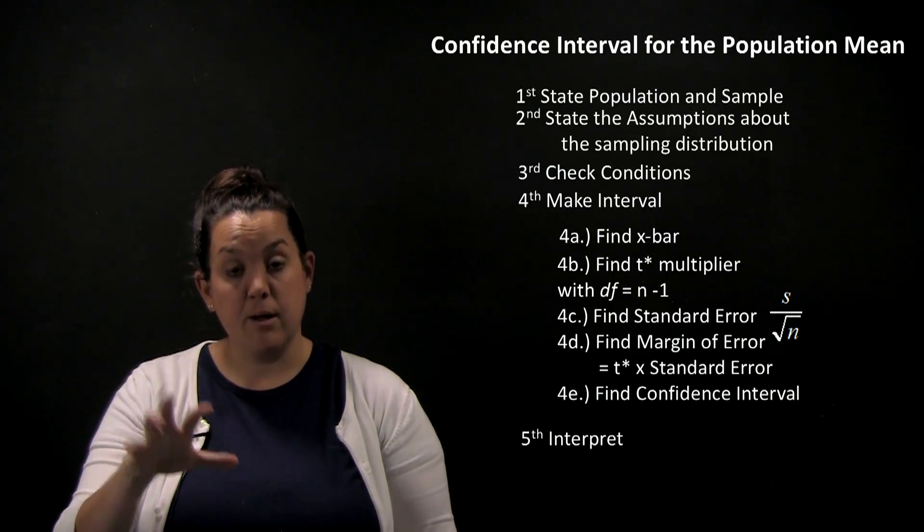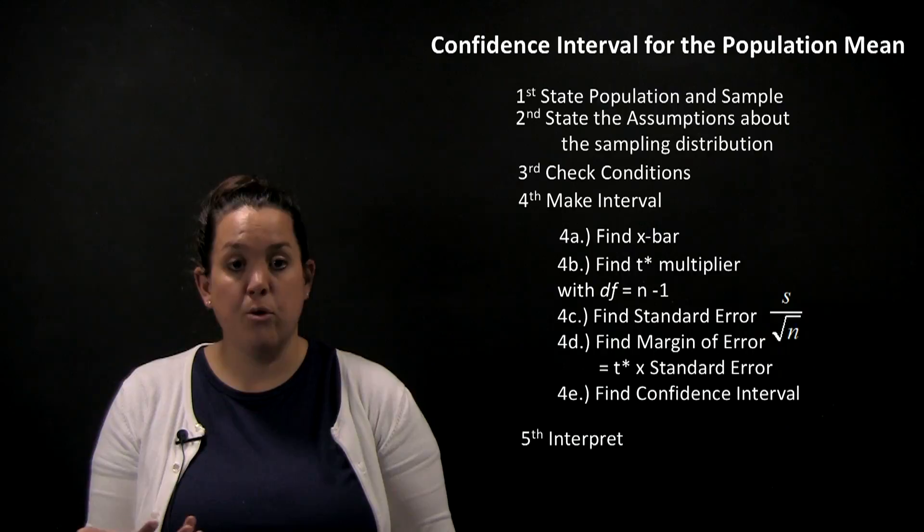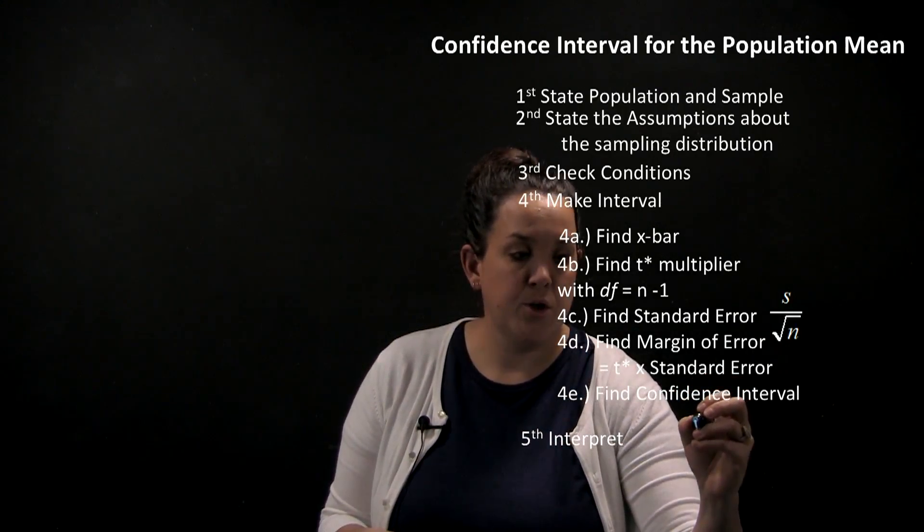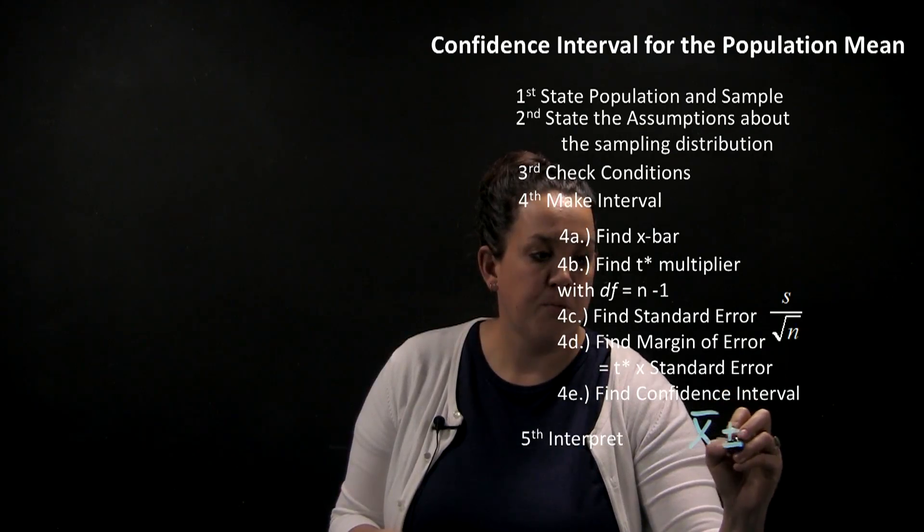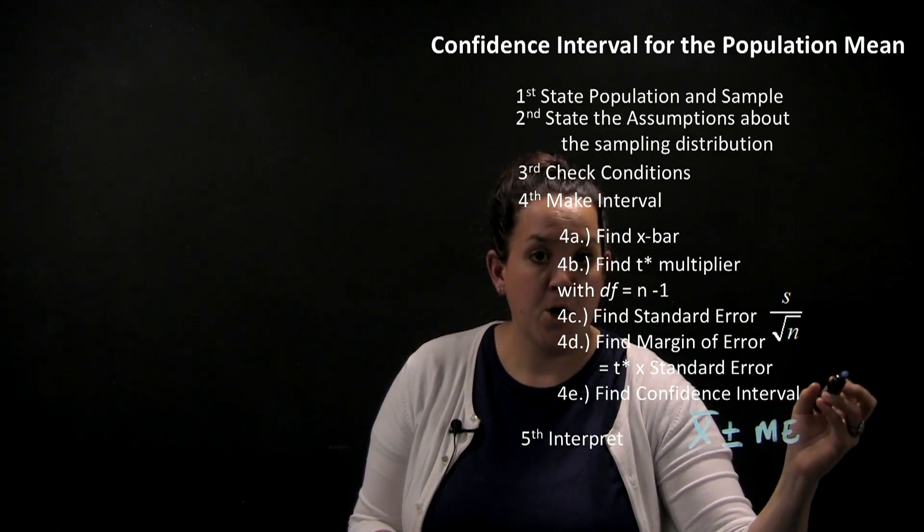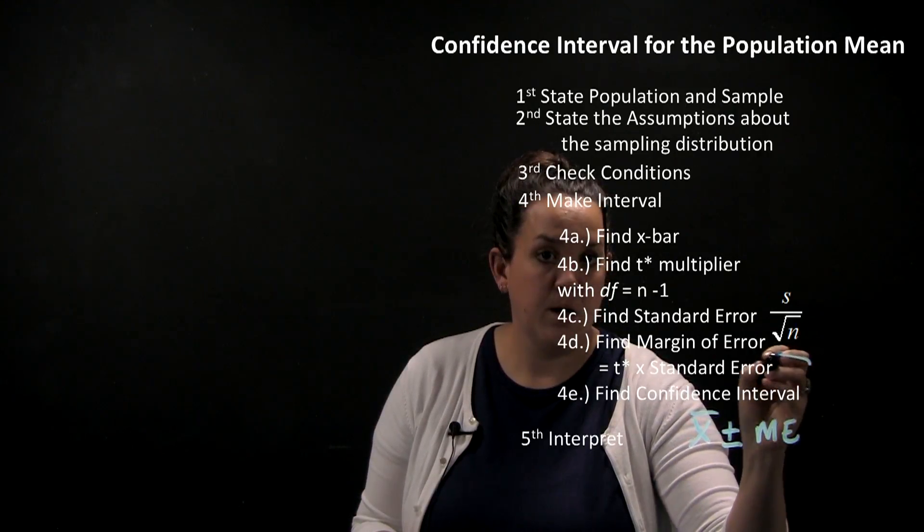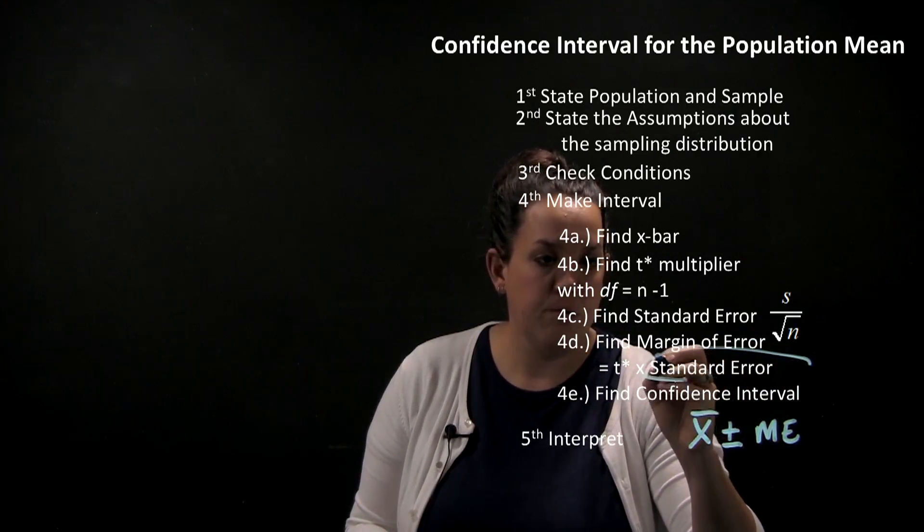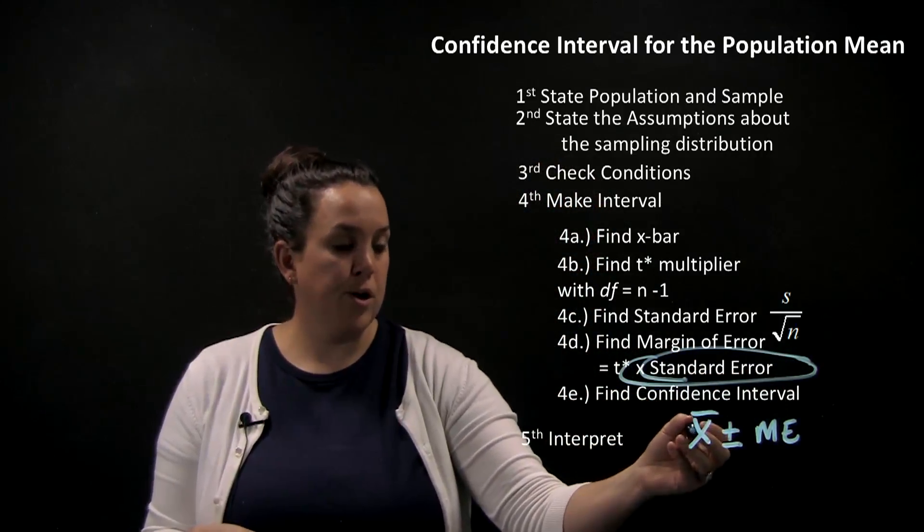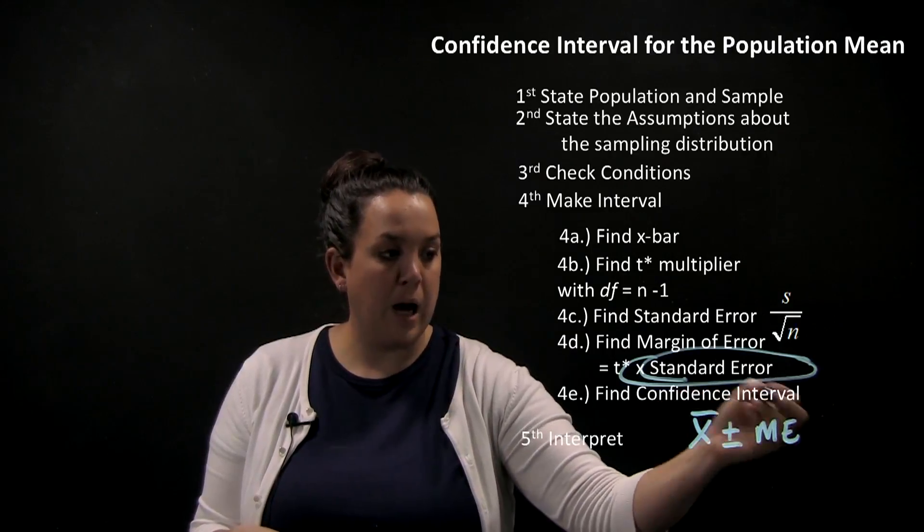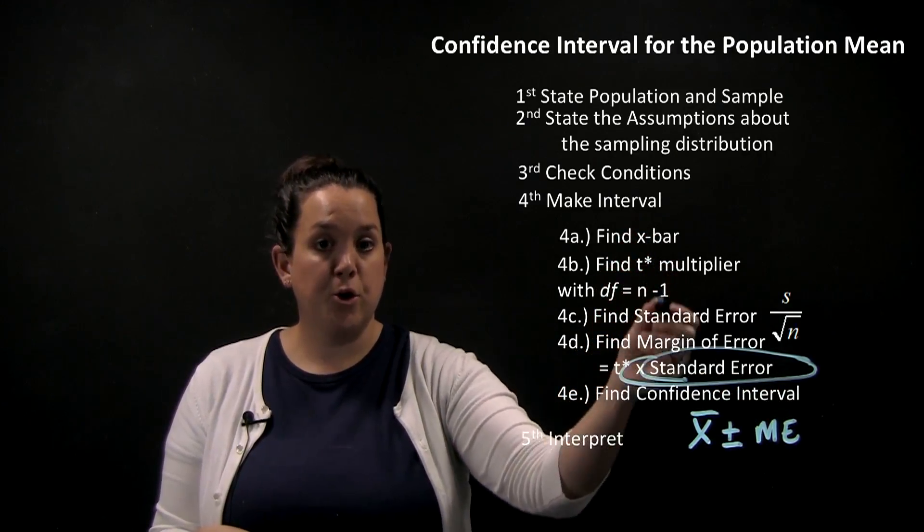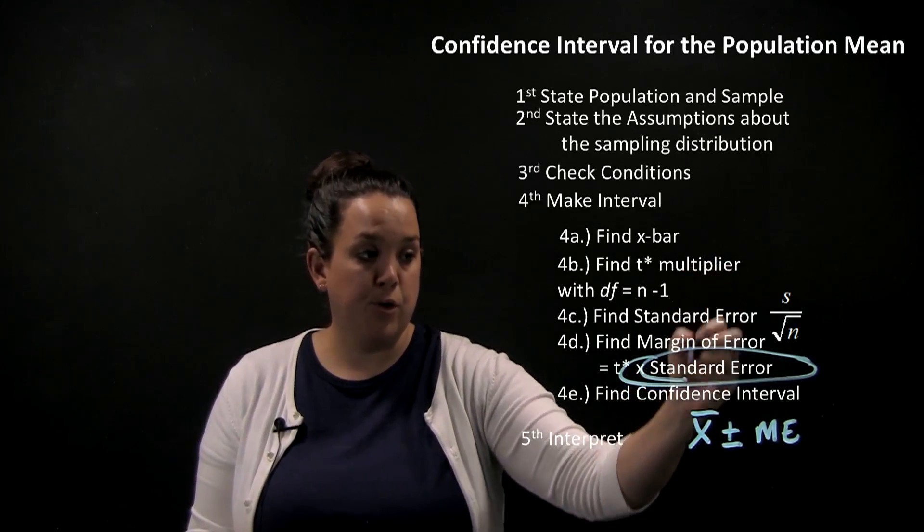Then we'll go through the process of actually calculating the interval. Our formula for a confidence interval is going to use x-bar plus or minus, essentially it's a margin of error, where margin of error is calculated by taking t-star times standard error. We are going to find a confidence interval that hopefully will contain mu.